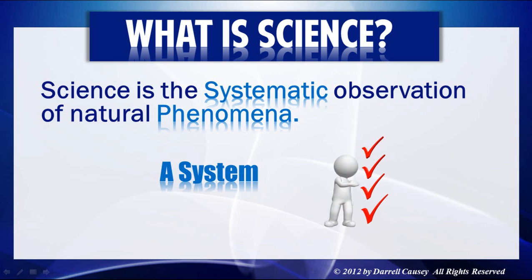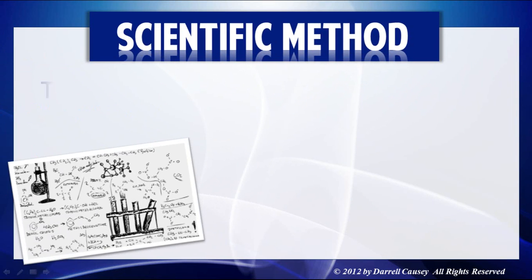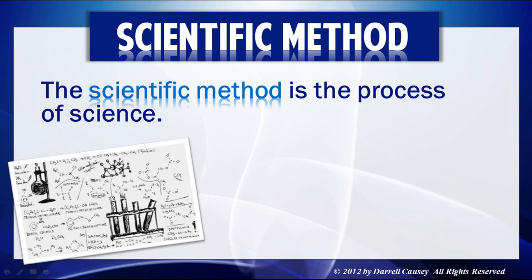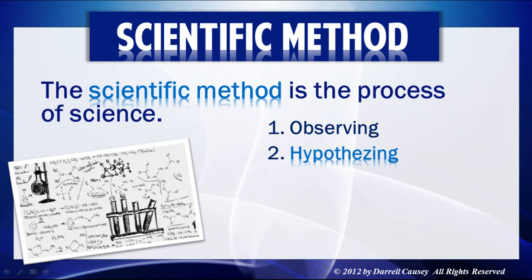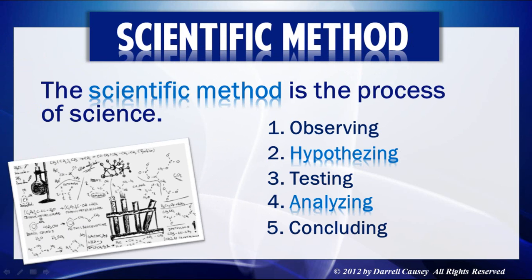And that process is the scientific method. The scientific method is the process of science, and it's based on observing, hypothesizing, testing, analyzing, and concluding. Not everybody may do everything exactly this way, but these are the five main steps to any kind of study in science.